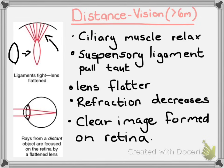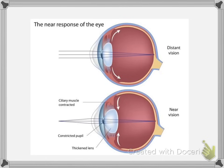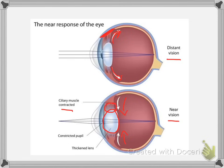Looking at both diagrams side by side: for distant vision, that is more than six meters, and near vision is close up. With near vision, the ciliary muscles are contracted, meaning the suspensory ligaments have moved inwards as they have slackened, causing the lens to become more bulgy and bigger, which increases the refractive power. With distant vision, the suspensory ligaments are pulling outward, the ciliary muscles have relaxed, and the lens is pulled flatter so that you can see further.